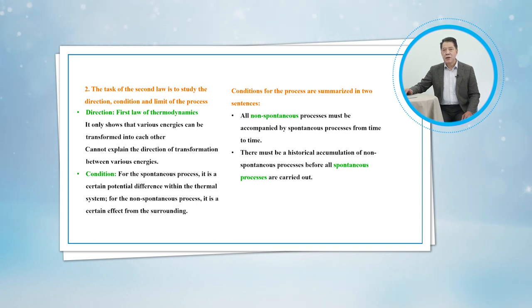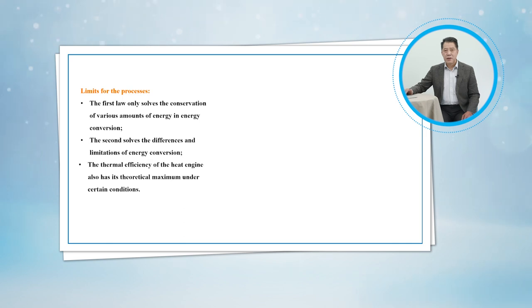There must be a historical accumulation of non-spontaneous processes before all spontaneous processes are carried out. Now, let's talk about the last task of the second law: the limits for a process. The first law only solves the conservation of various amounts of energy in energy conversion. The second law solves the differences and limitations of energy conversion. The thermal efficiency of the heat engine also has its theoretical maximum under certain conditions.